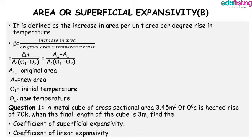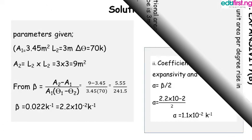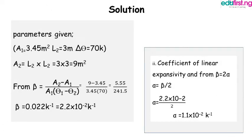The question says: a metal cube of cross-sectional area 3.45 meters squared at zero degrees Celsius is heated to 70 degrees Kelvin rise. The final length of the cube is 3 meters. Find: (a) the coefficient of superficial expansivity, and (b) the coefficient of linear expansivity.